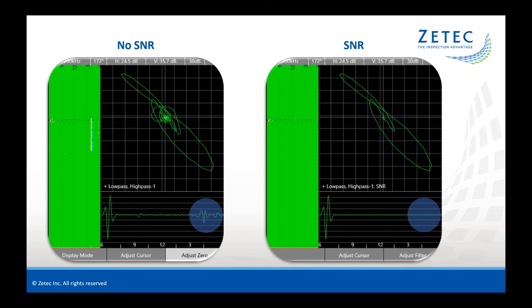With SNR filter applied on the image on the right, the noise is gone. Most importantly, look at the magnitude of the flaw signal and how it did not change.